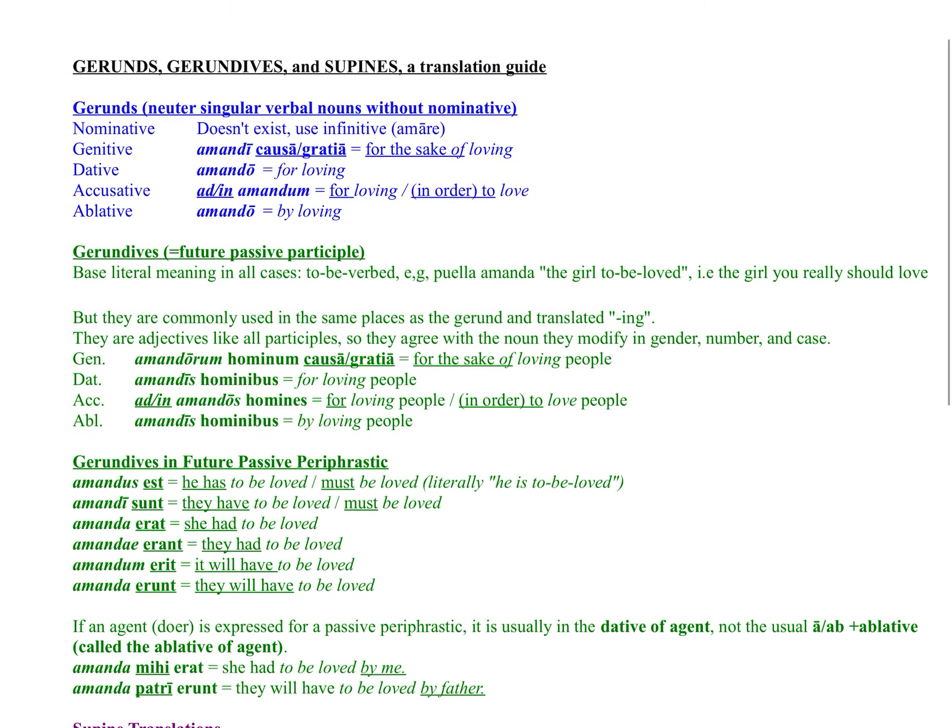Now let's move on to gerundives. The gerundive is also known as the future passive participle. Gerunds are verbal nouns; gerundives are verbal adjectives. You'll notice the -nd- in both the word gerund and gerundive — that's not coincidental. Both will have the -nd- in the stem. But gerundive has the -ive ending, just like an adjective in English. The base literal meaning of a gerundive is 'to be verbed.' So the phrase puella amanda means 'the girl to be loved,' essentially 'the girl that you really should love' — showing necessity or obligation.